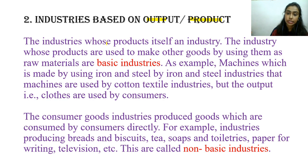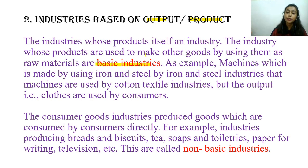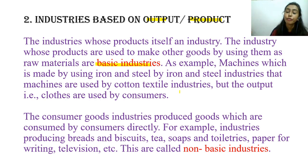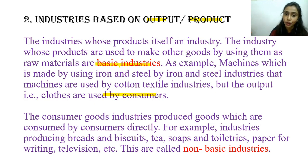What happens is that some industry's product is itself used as raw material for another industry. This is called a basic industry — meaning the finished goods of one industry become the raw materials for making other goods. For example, iron and steel: the iron and steel industry produces finished goods that are used to make machines, and machines are used to make clothes in the cotton textile industry.